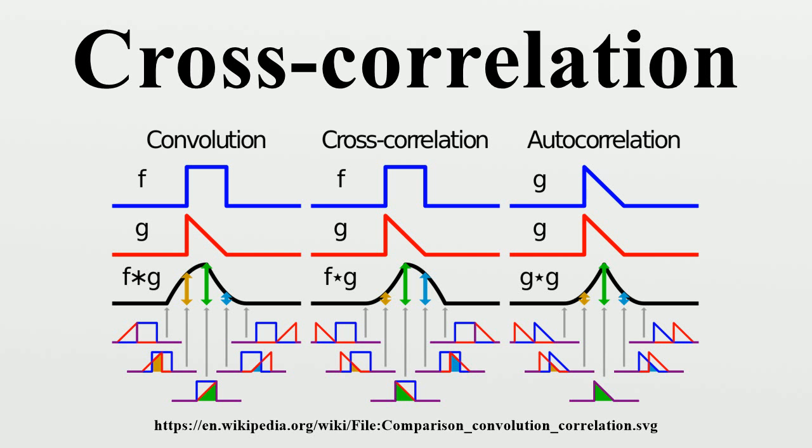Thus, if f and t are real matrices, their normalized cross-correlation equals the cosine of the angle between the unit vectors f and t, being thus one if and only if f equals t multiplied by a positive scalar. Normalized correlation is one of the methods used for template matching, a process used for finding incidences of a pattern or object within an image. It is also the two-dimensional version of Pearson product-moment-correlation coefficient.